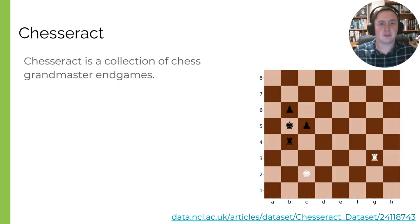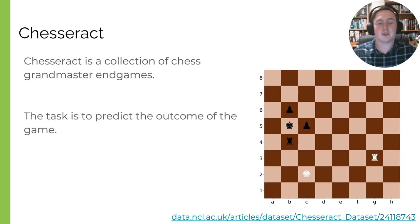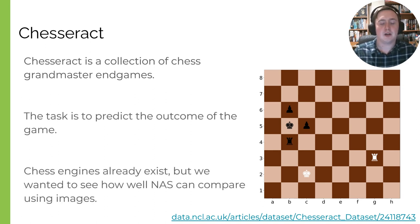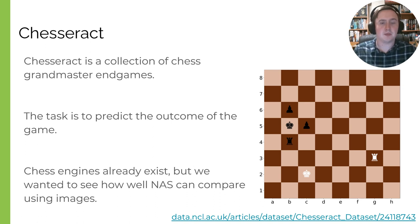Chesseract is a collection of grandmaster chess endgames and the task is to predict the outcome of the game. Chess engines such as Stockfish and AlphaZero already employ machine learning to not only predict who's going to win but the optimal moves to that win. We just wanted to see whether a visual representation of the board is enough for a machine learning model to predict who's going to win.